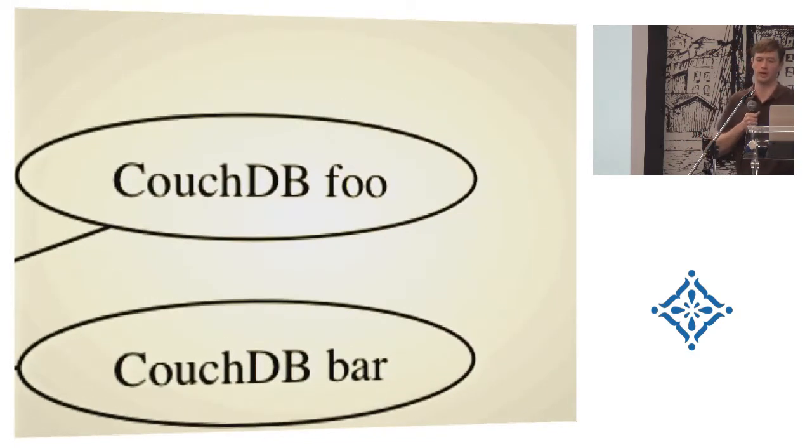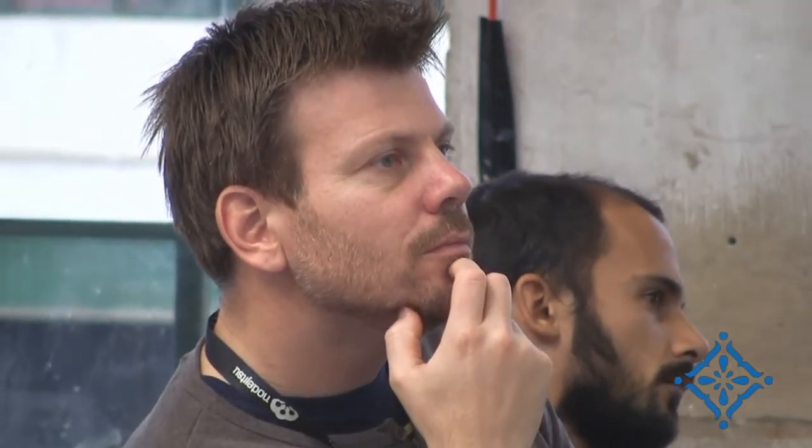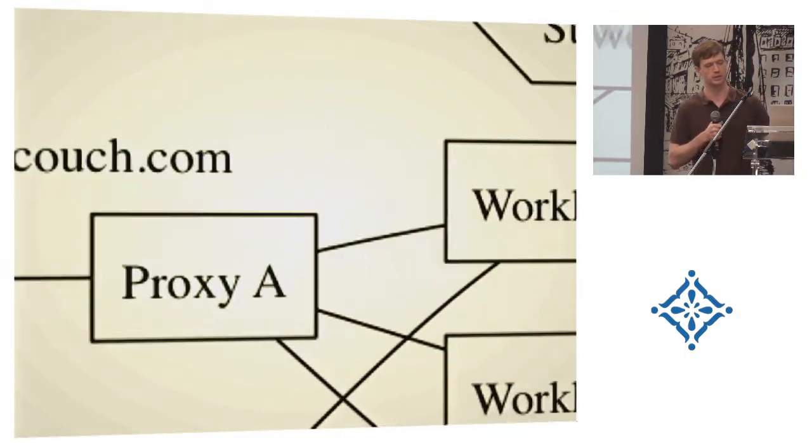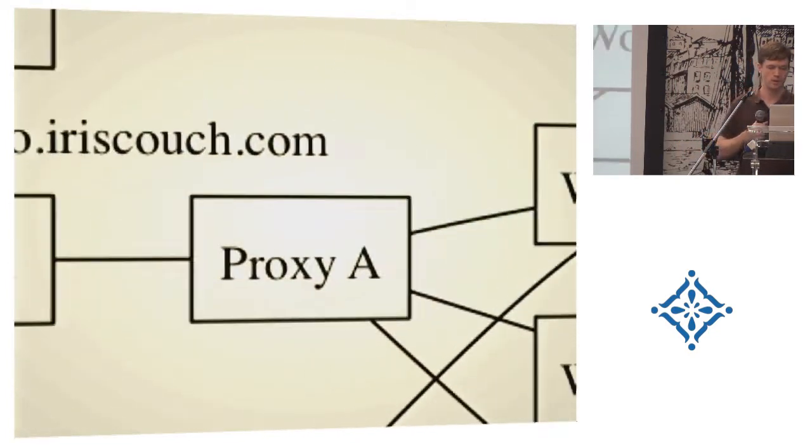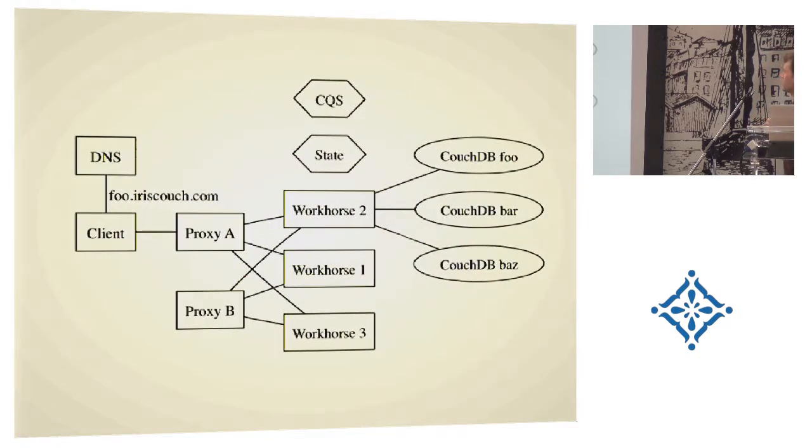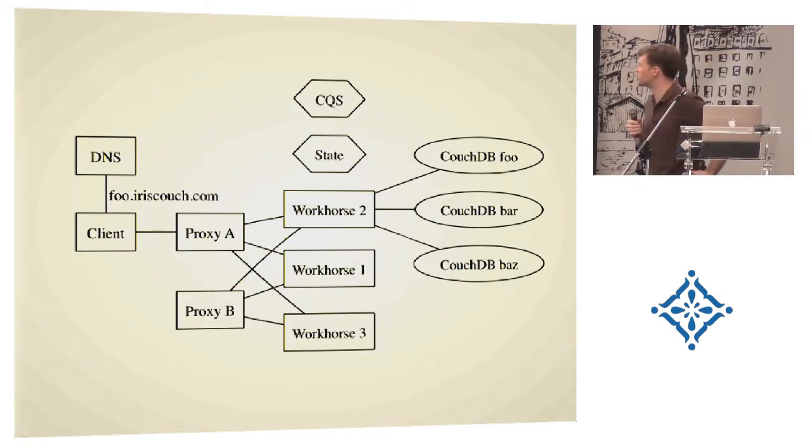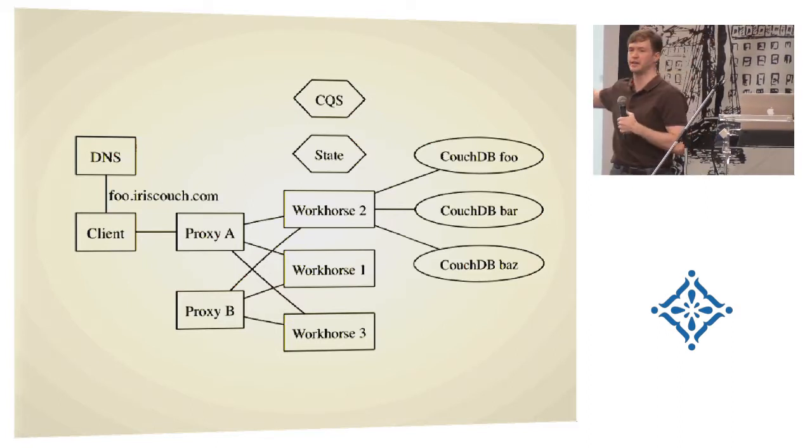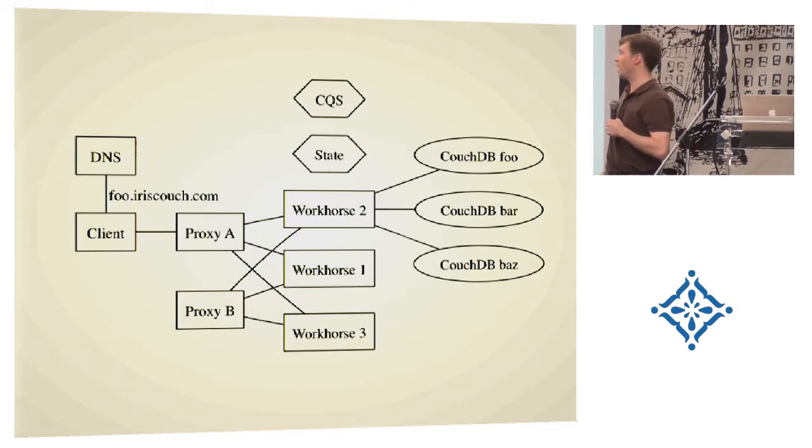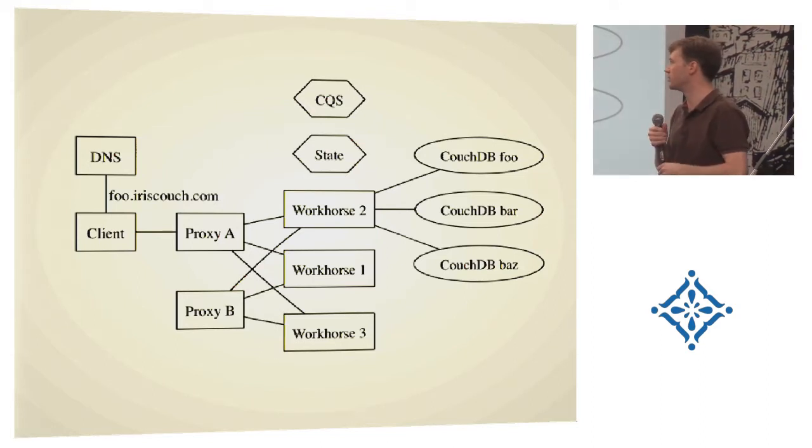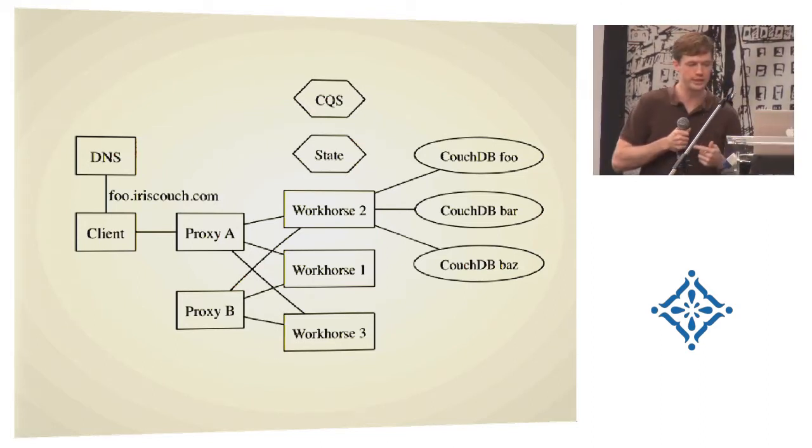And so on this workhorse, for example, there's foo.iriscouch.com. This is my mental model of how it works. Things go from the back end, through the proxy, to the front end, back to the proxy, through to the back end, and so forth. These proxies can crash. If they crash, the state is updated. This proxy is down. Obviously, the DNS server will stop answering with that IP address. So it's standard high availability and that sort of thing. But this is basically the idea.